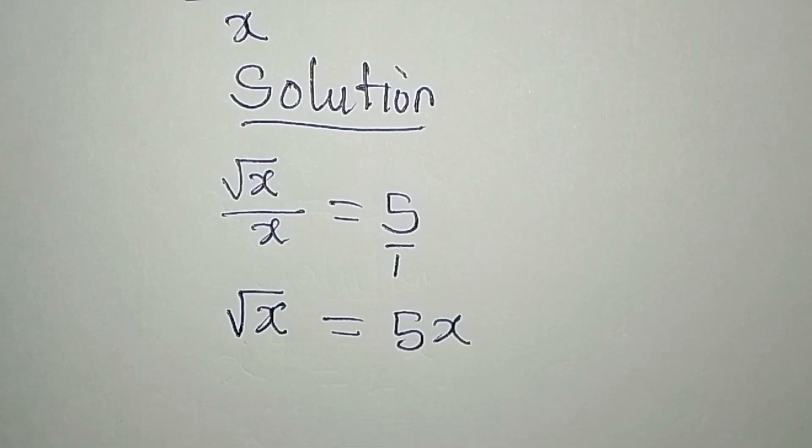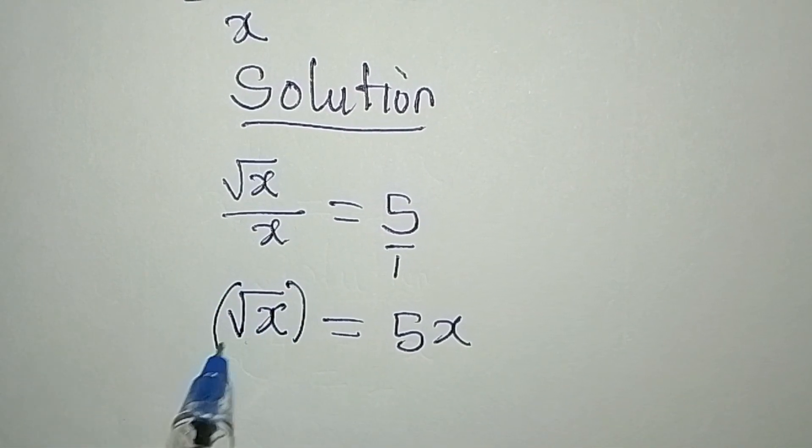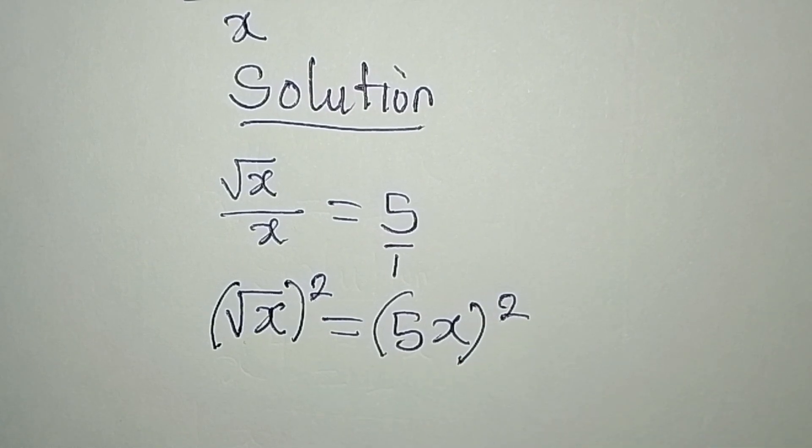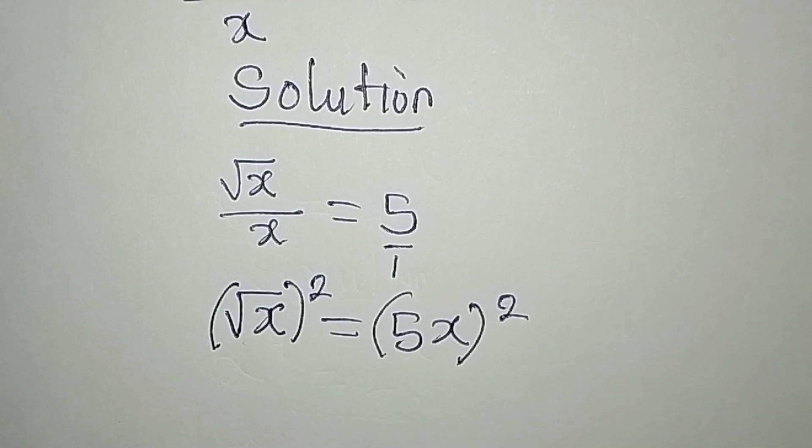Now the next thing is to remove the square root. We do that by squaring, and then the whole of this will be squared as well, because what we do on one side has to be done on the other side.